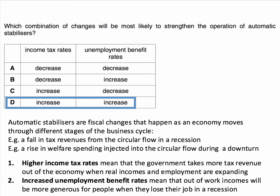Working through the answer: when income tax rates are higher, that means the government, during a boom, will be taking more tax revenue out of the economy because people's real incomes are rising and there are more people in work. So during a boom, a higher income tax rate takes more money out of the economy — that helps to moderate the extent or the scale of a boom.